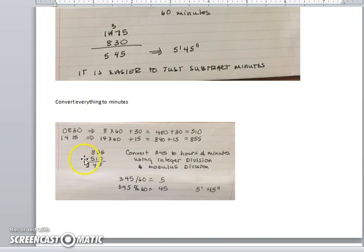We do have to convert minutes back to hours and minutes, and we can do that with modulus and integer division again. Integer division first: 345 divided by 60 gives us 5 hours, and 345 modulus 60 is 45, so we end up with 5 hours and 45 minutes.